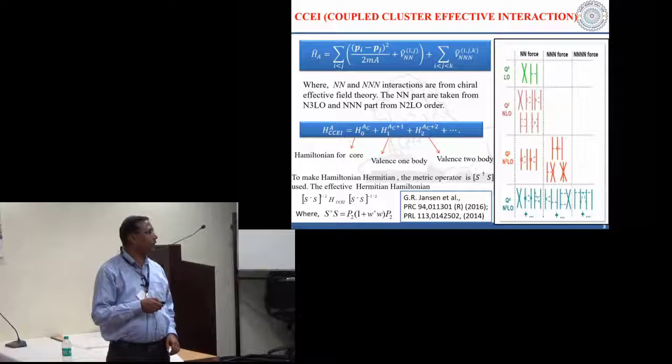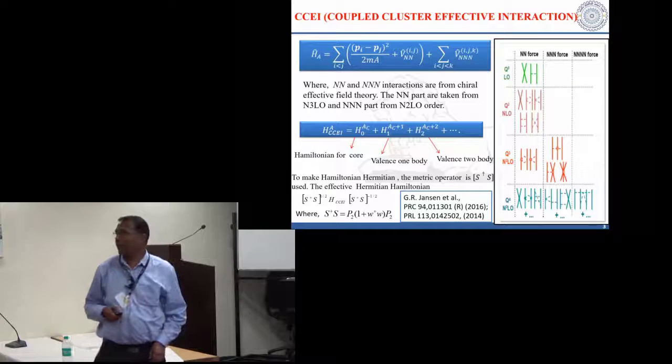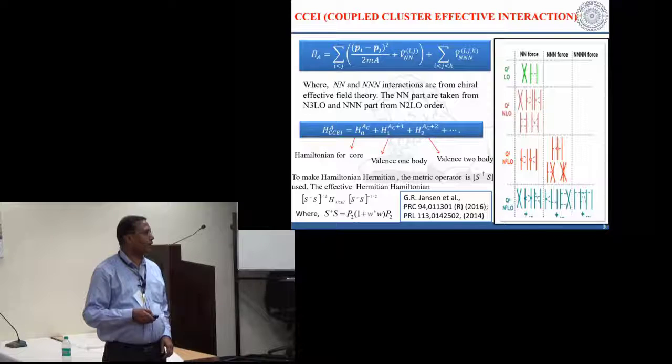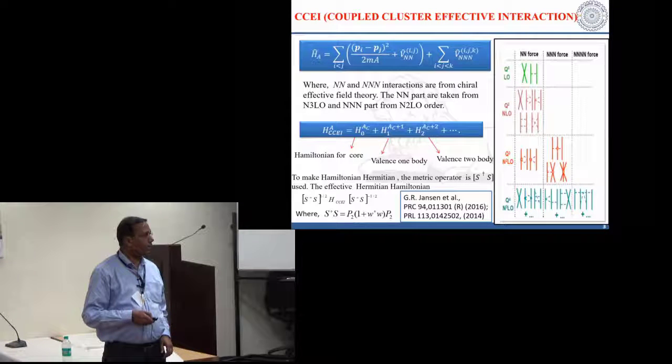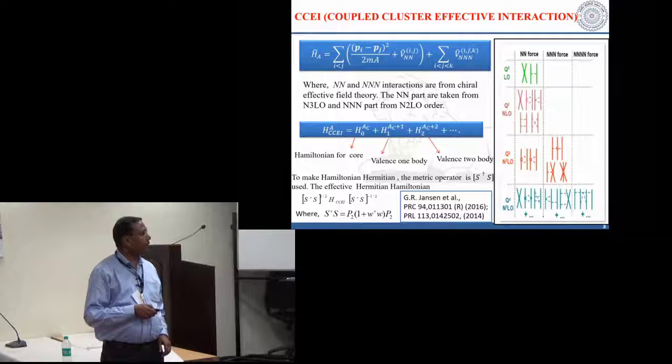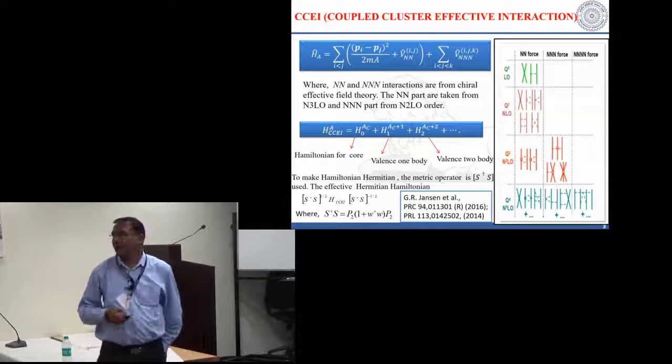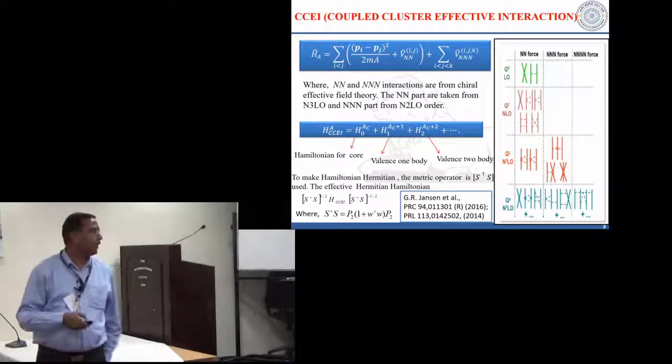We have the Hamiltonian with the two body part and also the three body part. The three body part is induced for NNLO and the two body part is basically N3LO interactions. We have a core and then one body orbit that is single particle energy and then we have two body terms here.